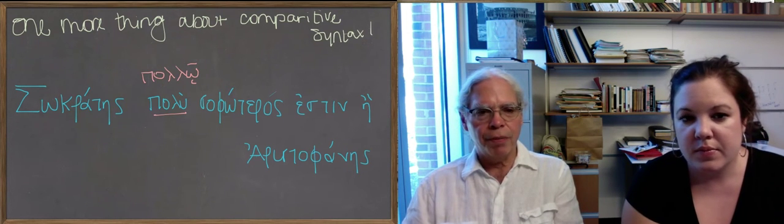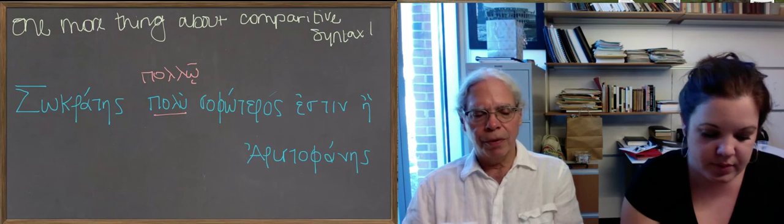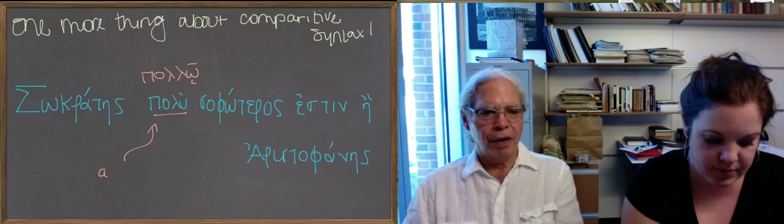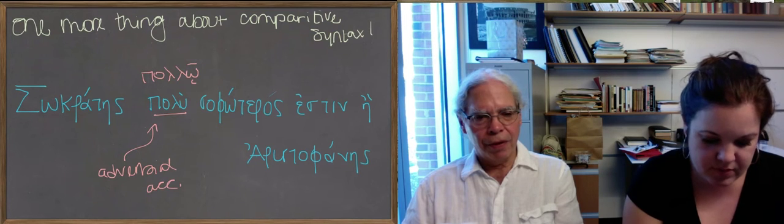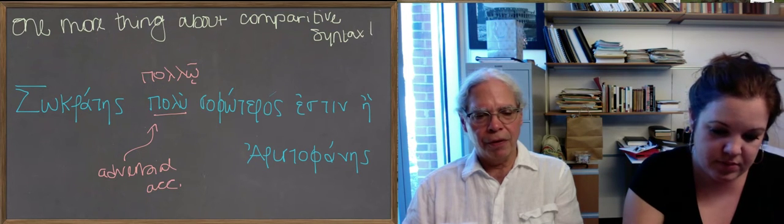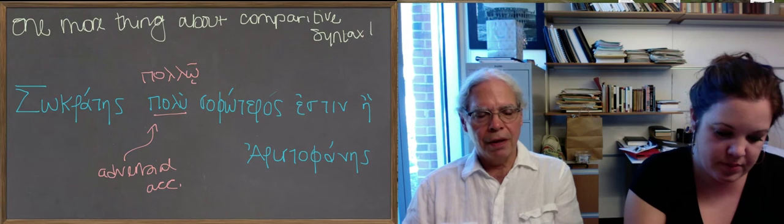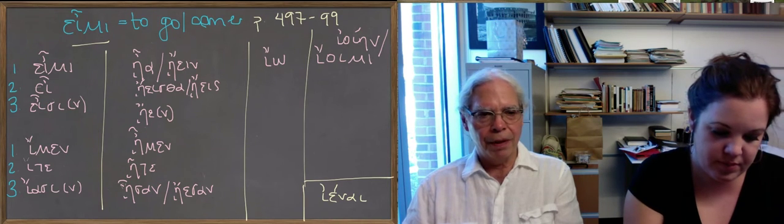The syntax is called adverbial accusative, an important thing. I forgot it. All right, so moving along, we want to talk about a verb, the verb εἶμι, not εἰμί, but εἶμι.